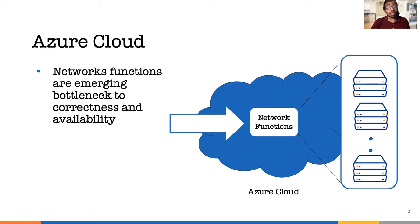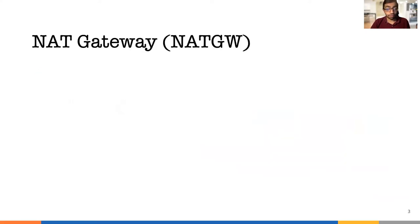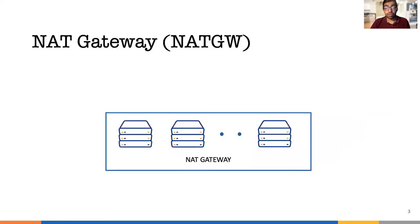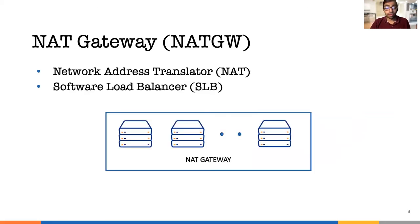Let me start with an example of what a typical large-scale network system looks like. NatGateway is one of Azure's internal network functions. It is a combination of a network address translator and a load balancer.